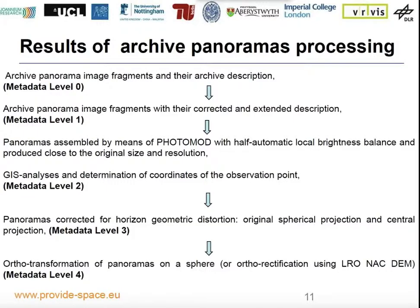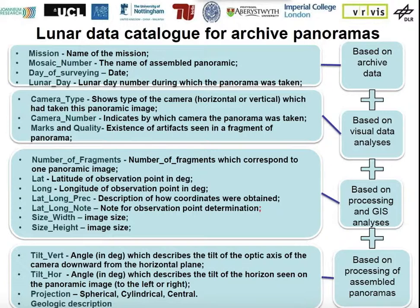Here you can see our image processing pipeline for archive panorama images. Level zero is the raw archive panoramas; then we assembled, corrected, analyzed panorama images, and created extended metadata. The final level of products is orthotransformation of panoramas, and if we can derive a digital elevation model from the panoramas, we can use it for higher-quality rectification. This shows the structure of the catalog of lunar archive panoramas, organized by level.